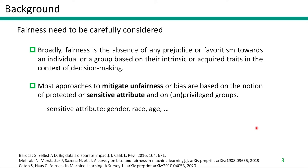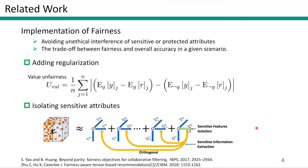Broadly, fairness is the absence of any favoritism towards an individual or a group, based on intrinsic or acquired characteristics in the context of decision-making. Most approaches to mitigate unfairness or bias are based on the notion of protected or sensitive attributes — for example, gender, race, and age. In order to achieve fairness, most fairness methods try to avoid unethical interference of sensitive or protected attributes.